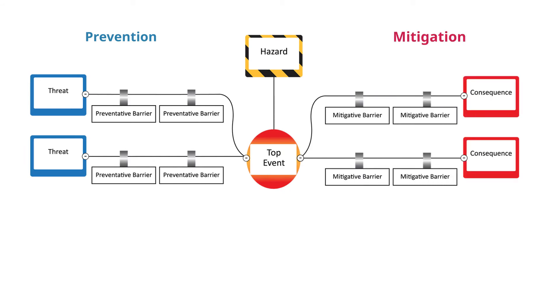The Bowtie Risk Analysis is a visual approach to help identify the various critical controls. It's a tool that shows how various factors can lead to the loss of control hazards and the resulting consequences.